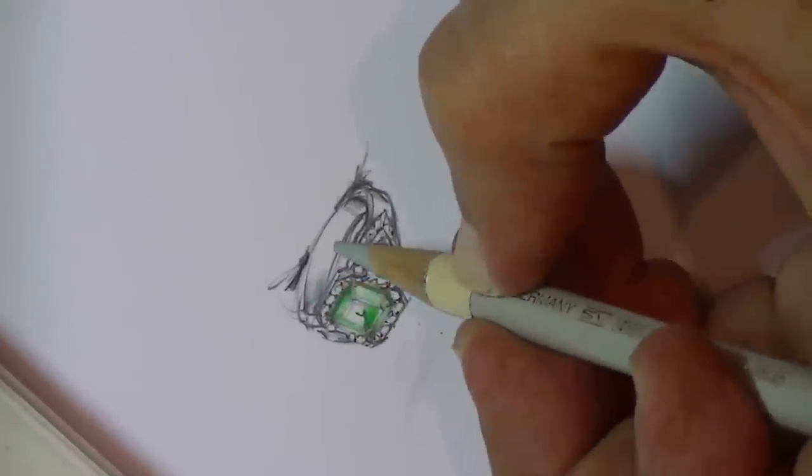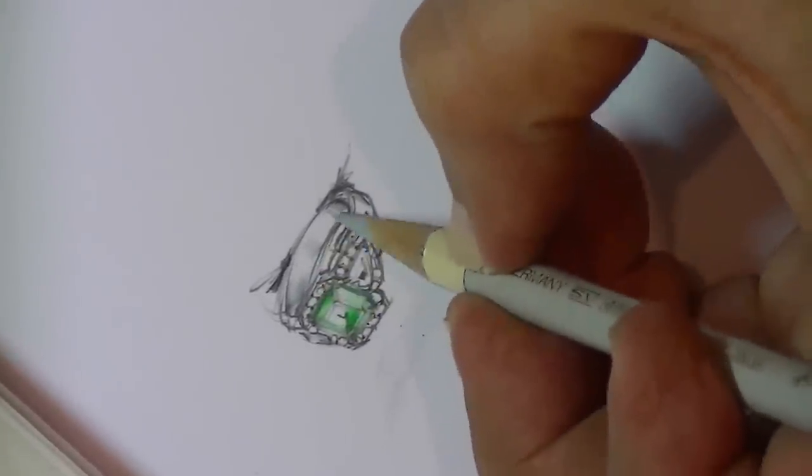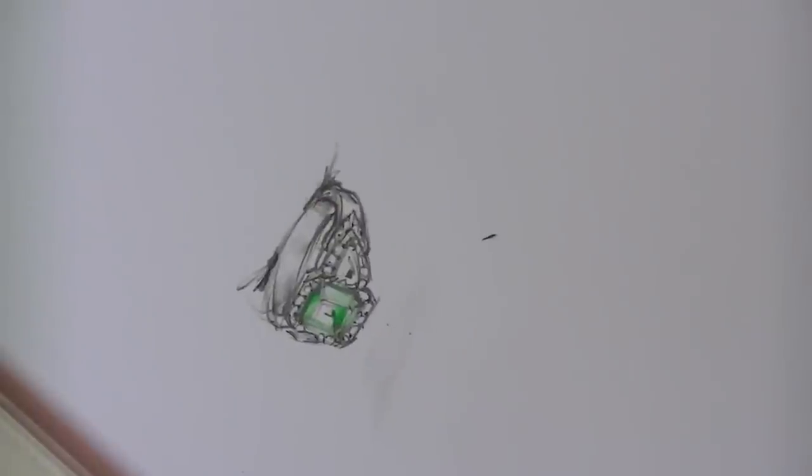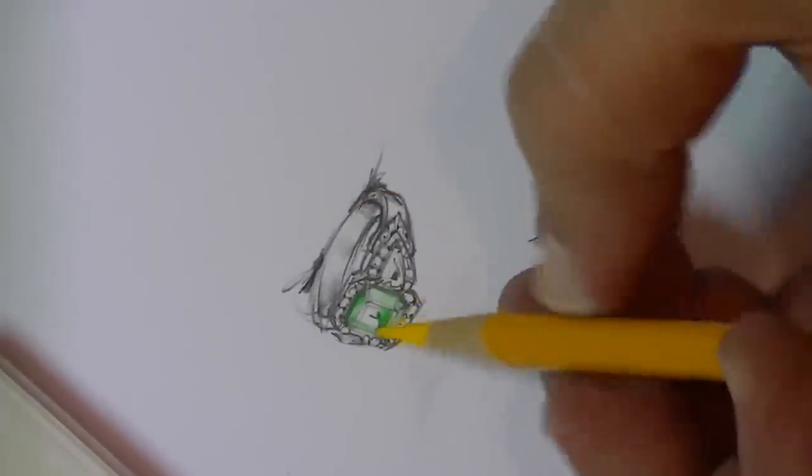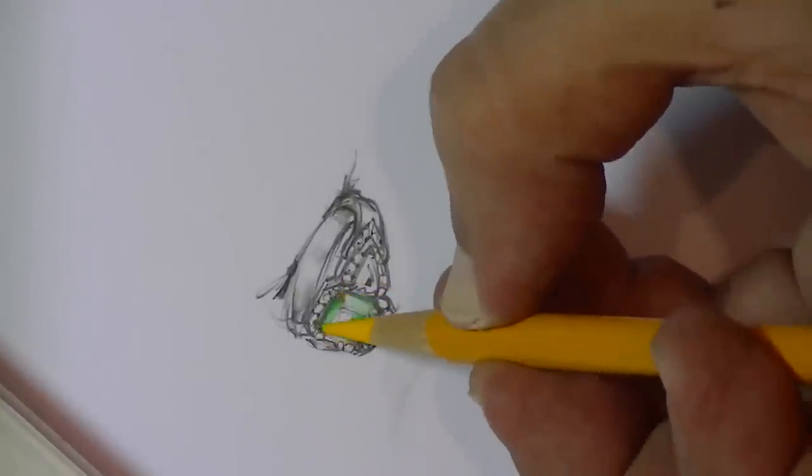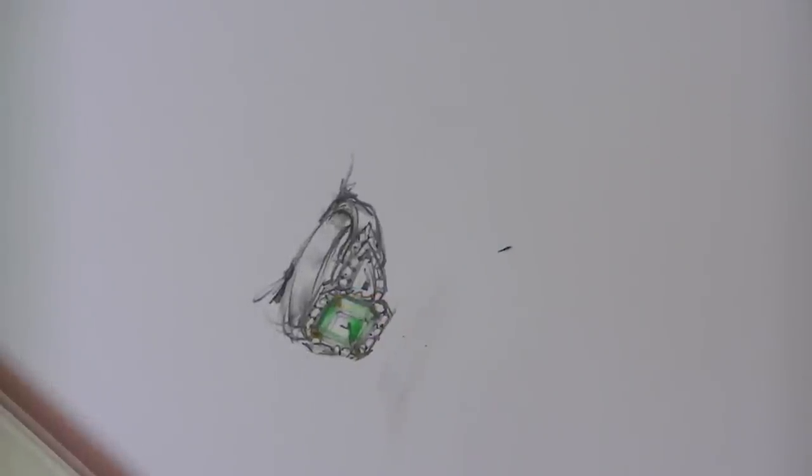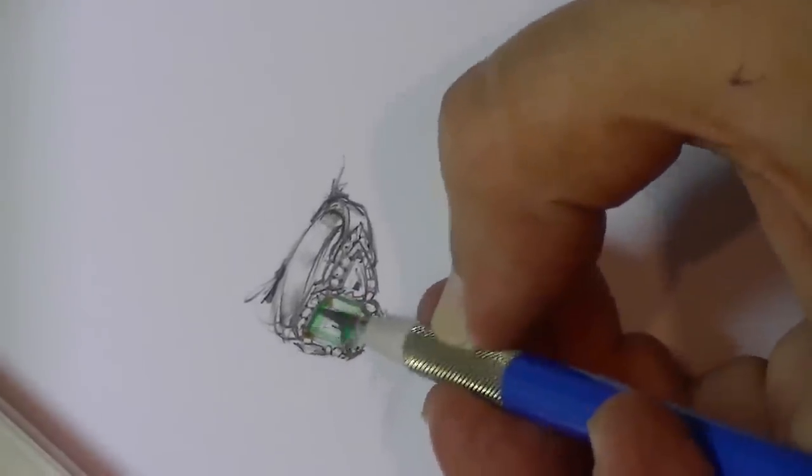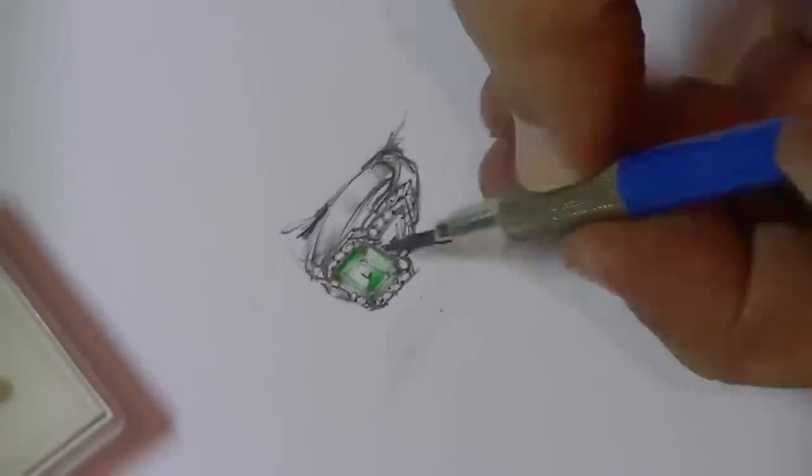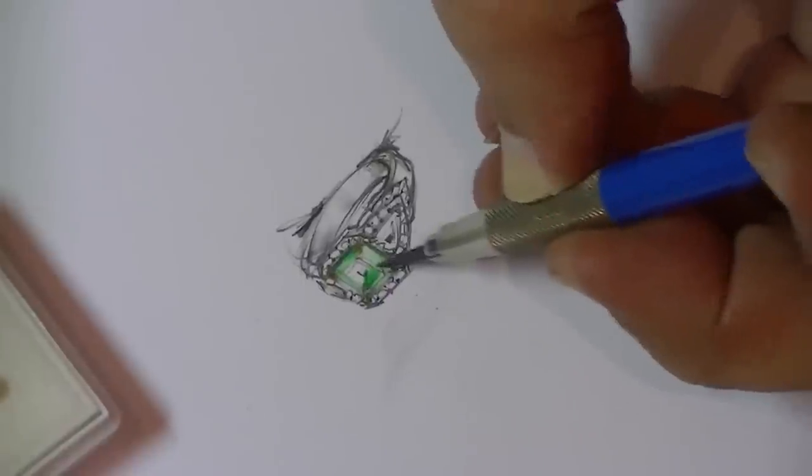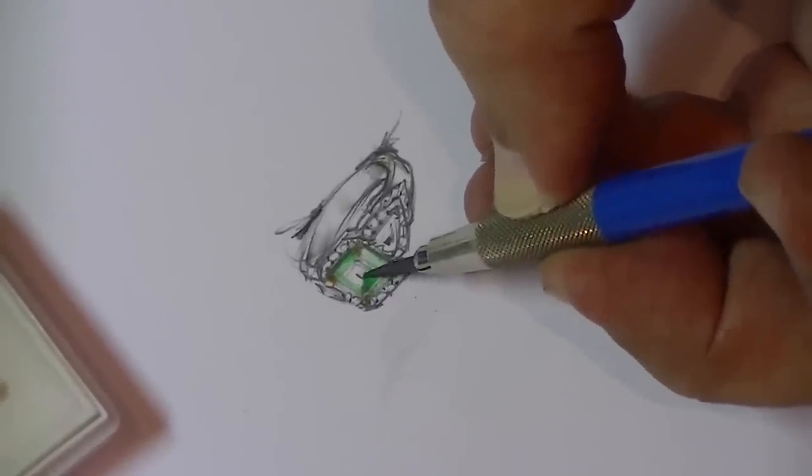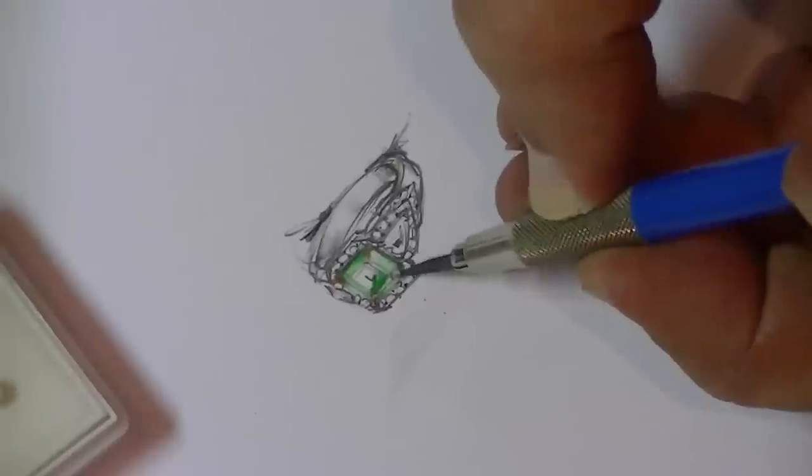Now although we're setting 90% of the ring in white, we still want to set the emerald, being an emerald. So the claws of the emerald are set in yellow and it'll look much more, well, certainly luxurious and safer from the emerald's point of view. Try and strengthen those lines a little bit.